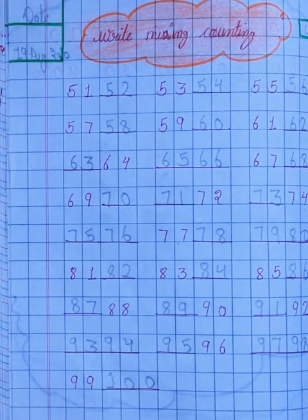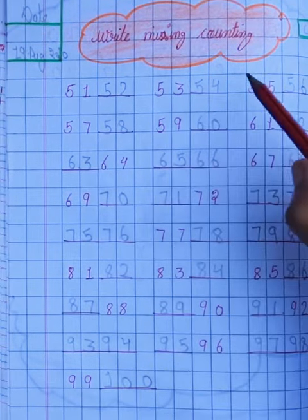You have to do missing counting, which means you're given boxes which you have to fill, like I have filled them, like this, okay students.